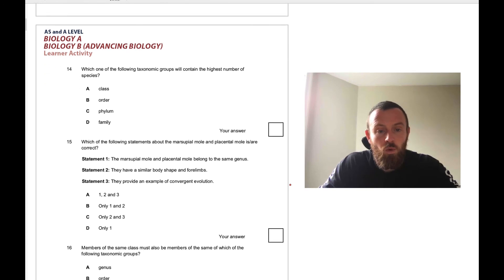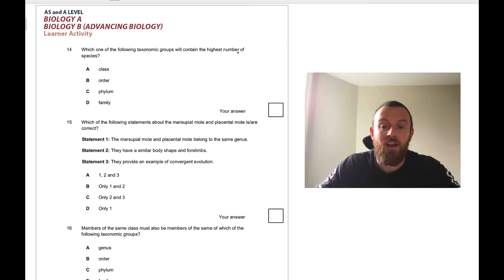14, which one of the following taxonomic groups will contain the highest number of species? This is the highest up. So did king philip, domain kingdom phylum? Or dinner king prawn curry or fat greasy sausages, there's another one.